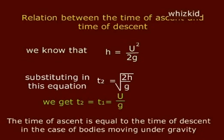Substituting in this equation, T2 is equal to square root of 2h by g, we get T2 is equal to T1 is equal to u by g.